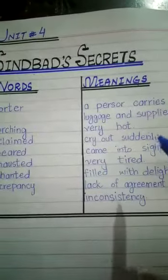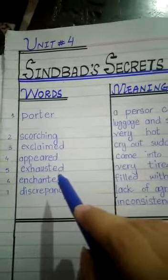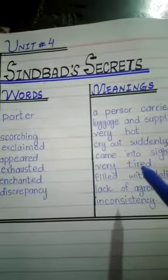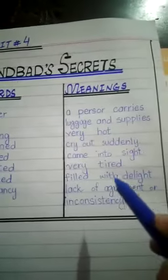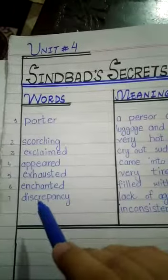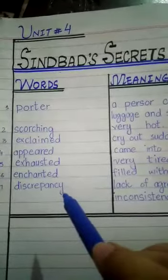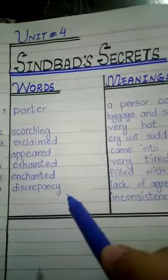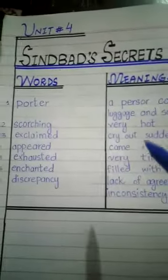Word number four: 'appeared' — means came into sight. Word number five: 'exhausted' — means very tired. Word number six: 'enchanted' — means filled with delight. Word number seven: 'discrepancy' — means lack of agreement or inconsistency.